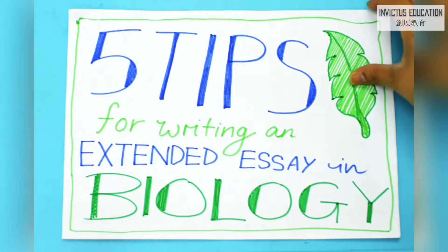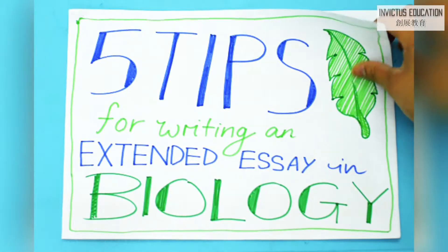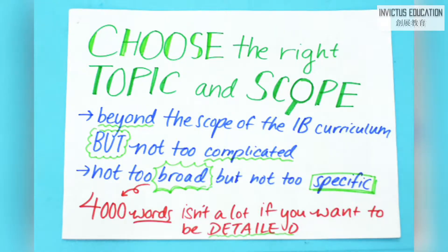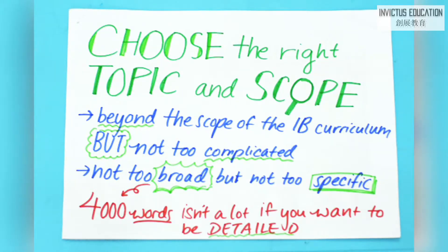Number 1: You need to choose the right topic and scope. Your essay needs to be beyond the scope of the IB curriculum, but not so complicated that you won't be able to understand the concepts. Remember, you're not expected to find anything groundbreaking, but you also can't investigate something that a standard textbook can easily answer. Half of the battle is making sure your scope is neither too broad nor too specific — 4,000 words isn't a lot when you want to write in detail and depth.